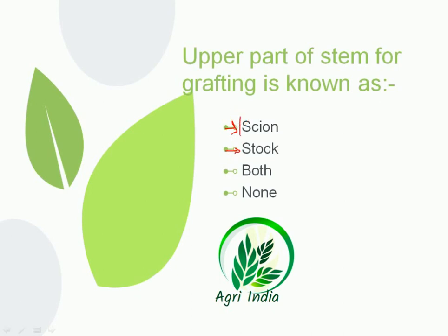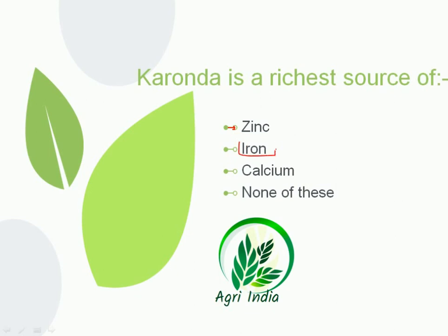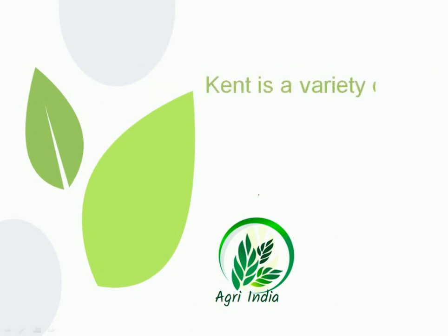Next question: karonda is the richest source of — options are zinc, iron, calcium, and none of these. Zinc is obtained from whole grains and milk products. Karonda is the richest source of iron, so the correct option is iron. Calcium is found in spinach, broccoli, and some other vegetables. The correct answer is iron.